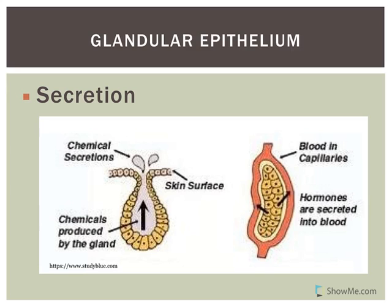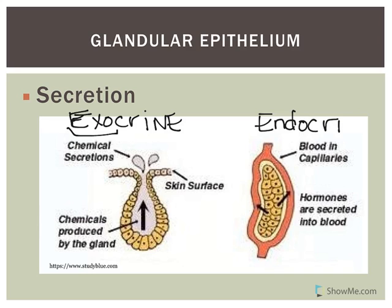Glands can be divided into two major types. Exocrine glands — 'exo' meaning out of — secrete a product into a duct, which then opens into either the external surface like your skin, or an internal space like your stomach or the lumen of your small intestine. Endocrine glands — 'endo' meaning within or inside — are the other type.